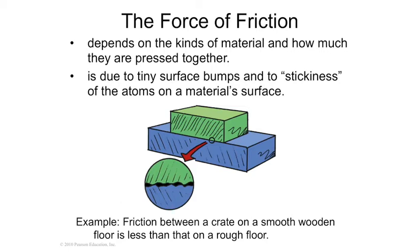Your socks on the floor is slicker than your tennis shoes on the floor. Friction depends on the objects that are grinding against each other and the surface area of that object. The friction on a crate on a wooden floor is less than on a rough floor. The rougher it is, the more the ridges are going to catch each other and resist friction.